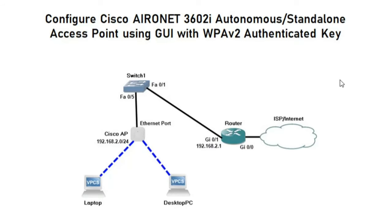First I'll show you the network topology. Here you can see my Cisco 2800 series router, my Layer 3 Cisco switch, and the Cisco Aironet 3602i autonomous or standalone access point, along with my laptop and a desktop PC. For this video I'll focus on how to configure the Cisco standalone access point with the GUI interface, and briefly discuss the router IP address configuration.